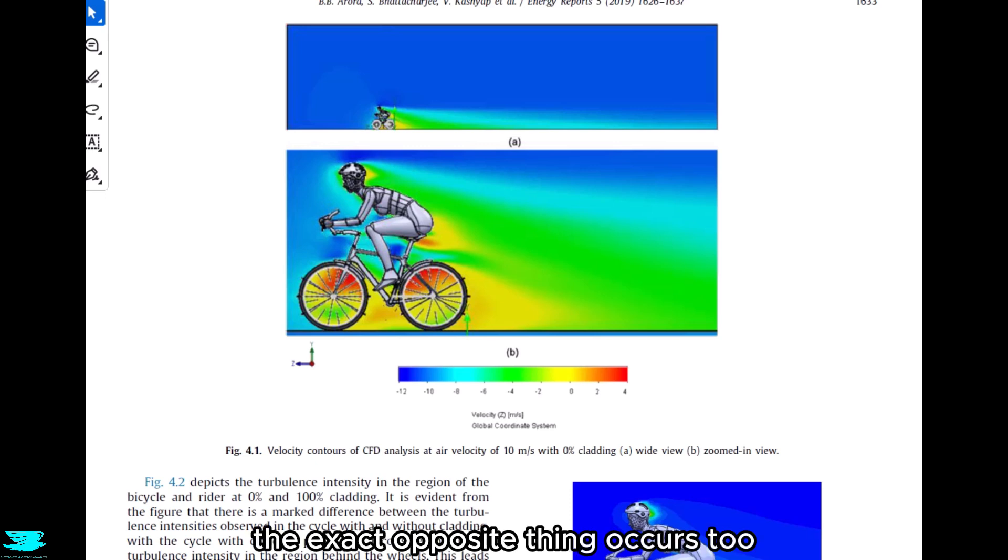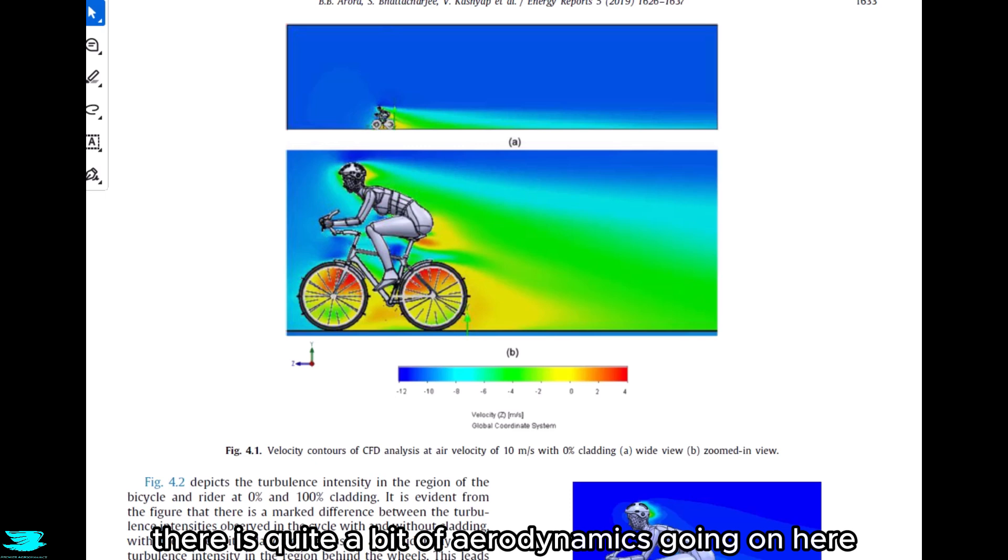That's even more interesting because that's where the wheels are pushing forwards, and I would have thought that would, if anything, push the flow forwards a little more, decelerate it, and make it a lower speed here. But it doesn't seem to do that. At the bottom of the rim, the exact opposite thing occurs too. But what all this does tell us is that there is potential for the covering of the rim to affect aerodynamics of the bike. You can see that there is quite a bit of aerodynamics going on here, and maybe the covering will change that.